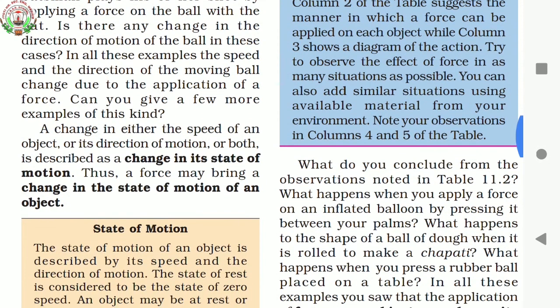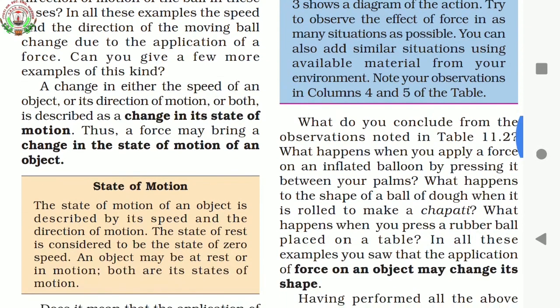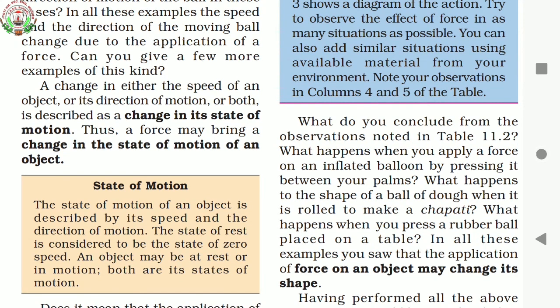You can see more examples from your everyday life. A change in either the speed of an object or its direction of motion or both is described as a change in its state of motion. The state of motion of an object is described by its speed and direction of motion. The state of rest is considered to be the state of zero speed. If the object is at rest, its speed is zero. An object may be at rest or in motion — both are its states of motion.